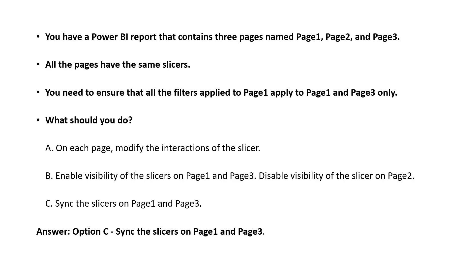Sixth question: you have a Power BI report containing three pages — Page 1, 2, and 3 — and all pages have the same slicers. You need to ensure that filters applied to Page 1 also apply to Pages 1 and 3. There is something known as Sync Slicer. You can sync slicers between two or three pages. If on Page 1 you filter on customer ID, Page 3 should automatically filter on customer ID as well. Sync Slicer — option C — is the answer.